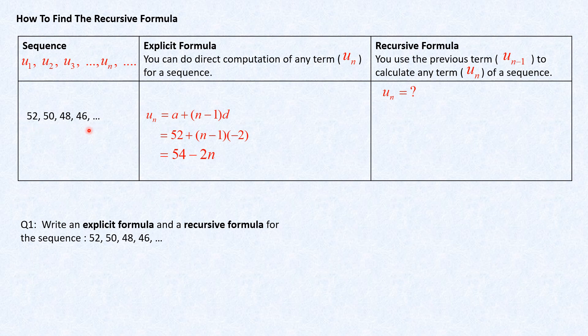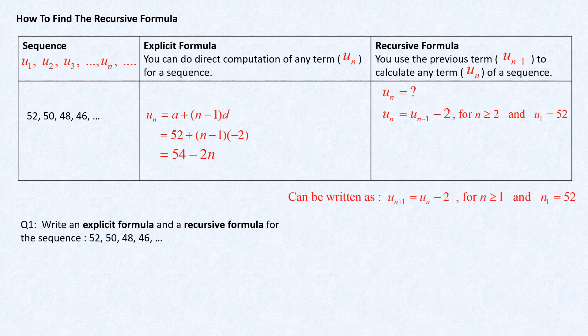For the recursive formula, since we need to relate to the previous term: the second term is the first term minus 2, and the third term is the second term minus 2. From this pattern we can write out the relation, giving us the recursive formula for the sequence. Don't forget to state the condition for n and the value of the first term. You can also write it in the alternative format.